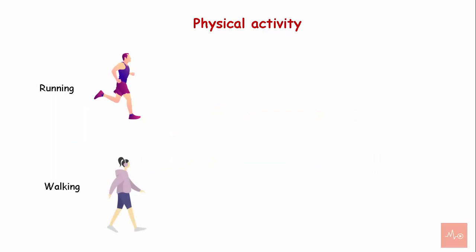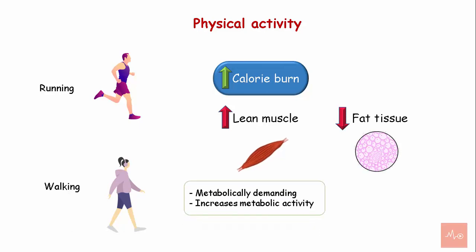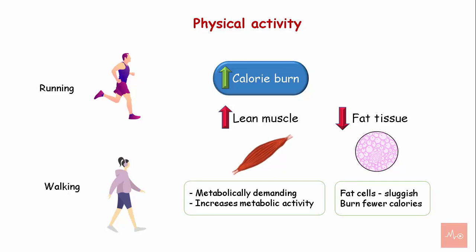Physical activity. Physical activity like running and walking can increase the calorie burn as they increase the cardiac output. Exercise leads to increased lean muscle and reduces fat tissue. Muscle is a metabolically demanding tissue and increases the metabolic activity, while fat cells are sluggish and burn fewer calories. Thus BMR increases during physical activity.